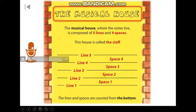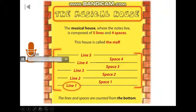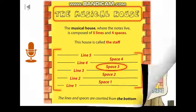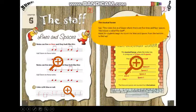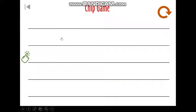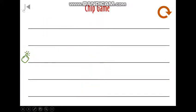The musical house, where the notes live, is composed of five lines and four spaces. This house is called the staff. The lines and spaces are counted from the bottom.